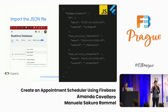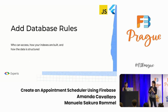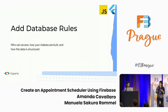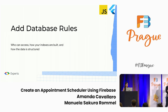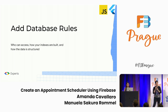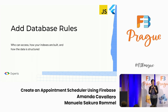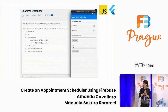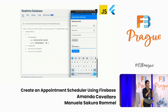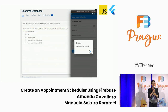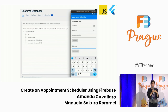After that, you would add the database rules. The rules are important to show who can access, how the indexes are built, and how the data is structured. If you're working from the dashboard, you'd see a tab where you can edit everything and click publish. If you're working from a file on your computer, you'd have a Firebase rules file where you add those rules and deploy later. We can add and cancel appointments, and they appear and disappear from the real-time database in real-time.